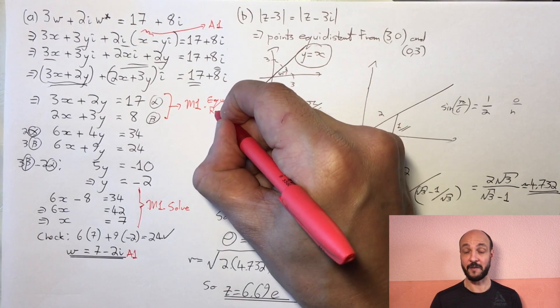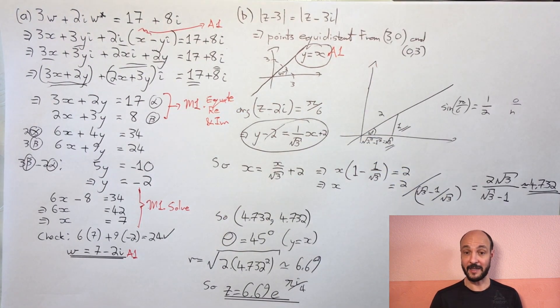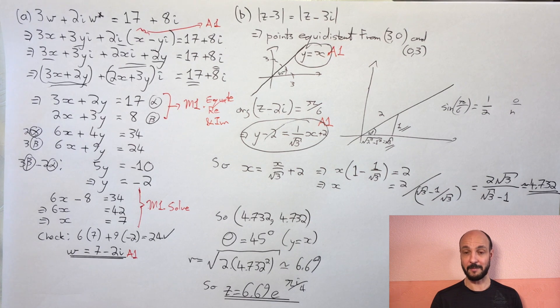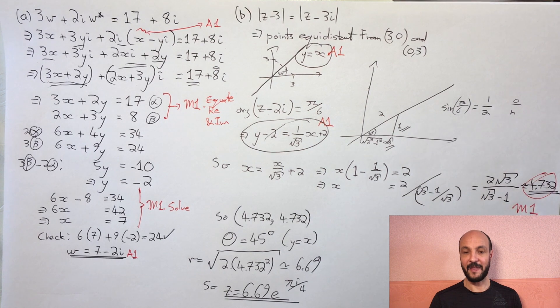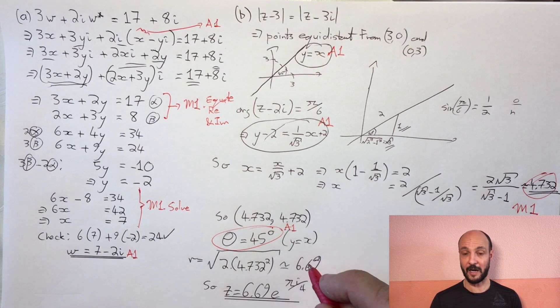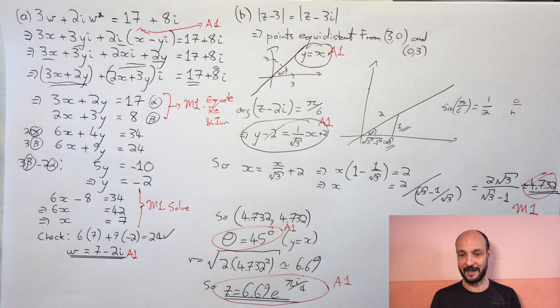Five marks in the second part. The first is an accuracy mark for finding that the line y equals x is relevant for the second equation. A second accuracy mark for finding that y equals x over root 3 plus 2 is the way to map out the first equation. And then we get a method mark if we go ahead and solve those, either for x or y to get a value there. And then we've got two more accuracy marks. One is for our theta if we identify that theta is pi over 4. And the second one is for our r, our magnitude, providing that that is 6.69. And to get that second one, we need to put them together in the r, e, the i, theta. So one mark from theta and one mark from writing r, e, the i, theta with the correct number 6.69e to the pi i over 4.